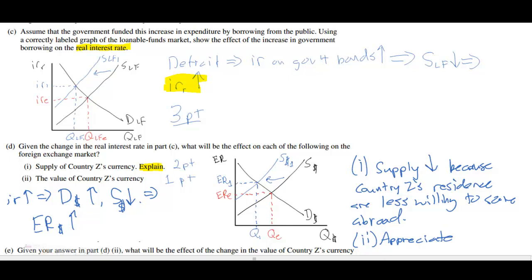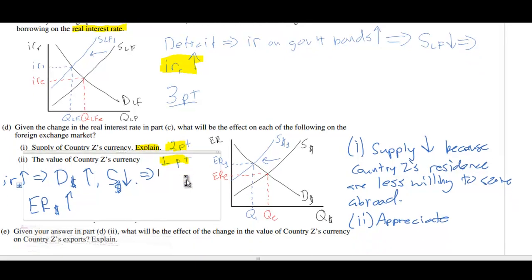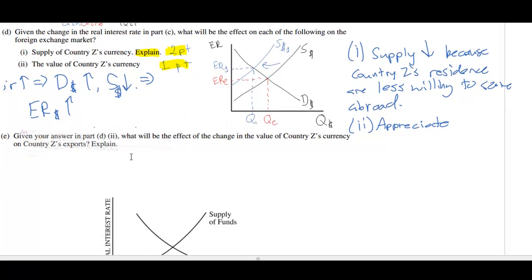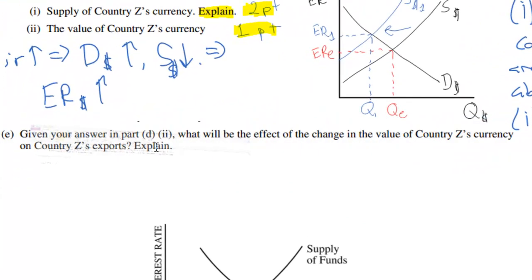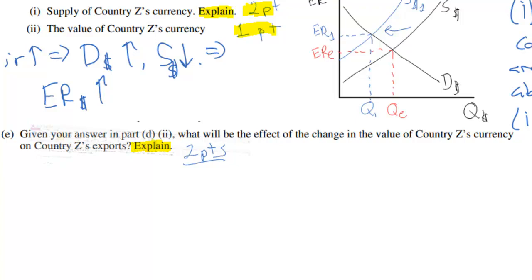Let's move on to the final part of this long FRQ. Part E says: given your answer in part D(ii) — that the currency will appreciate — what will be the effect of the change in the value of country Z's currency on country Z's exports? This is also going to be a two-point question because it asks for an explanation. Any time an explanation is asked for, you must give a brief one. If an explanation is not asked for, simply indicate the answer.